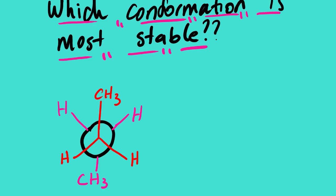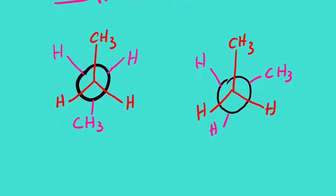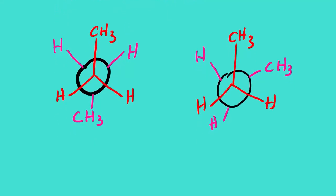The second diagram is gauche conformation and the angle between the carbon atoms is 60 degrees or 300 degrees.